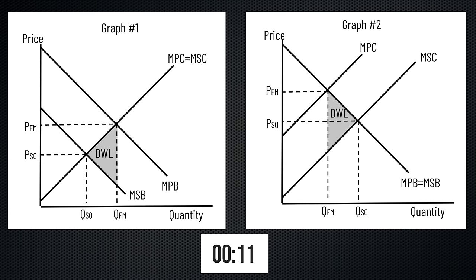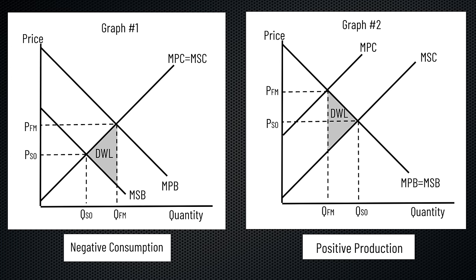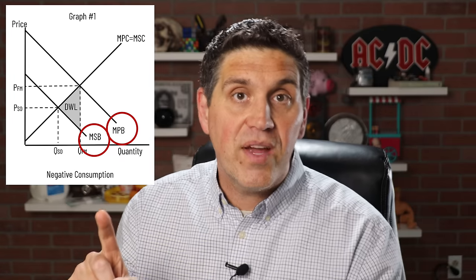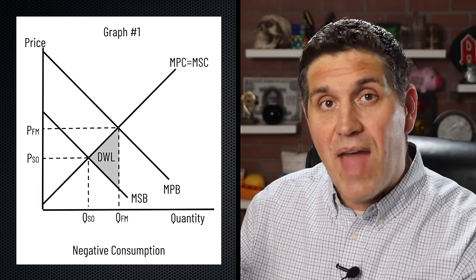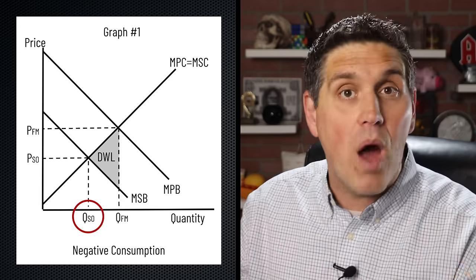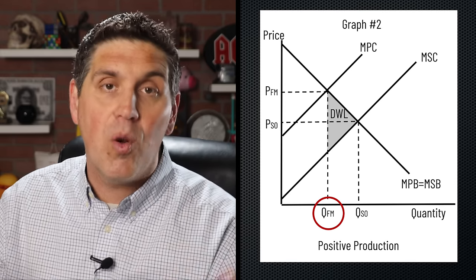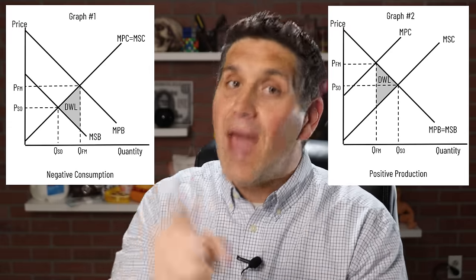That was a lot, but you still need to practice. I'm going to give you two graphs — figure out what type of externality. Is it positive or negative? Is it production or consumption? The answer: one is a negative consumption externality, and the other is a positive production externality. You know this by following the three rules: consumption externalities have two benefit curves; production externalities have two cost curves. For negative externalities, free market quantity is more than socially optimal. For positive externalities, it's less. And dead weight loss always points to socially optimal — right for positive, left for negative.